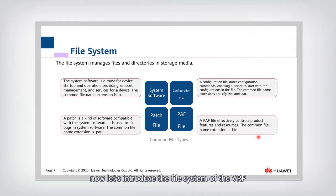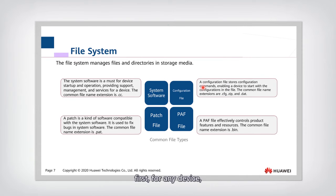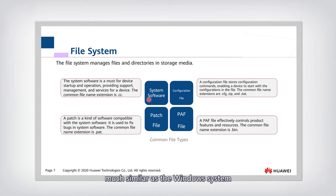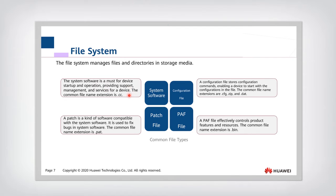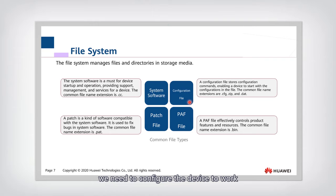Now let's introduce the file system of VRP. There are several different types of files. First, every device must have system software — similar to Windows or Linux on a PC. Routers and switches also need system software, which is required for startup, operation, and to provide management for the device. The second type is the configuration file, which stores the different setups we configure on the device.